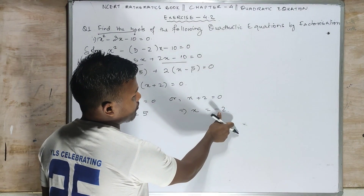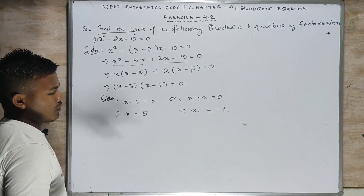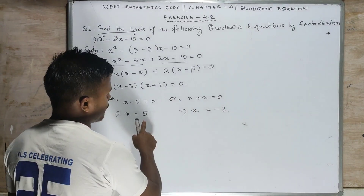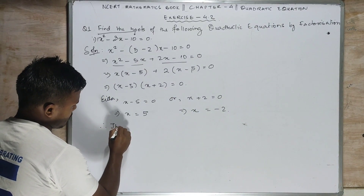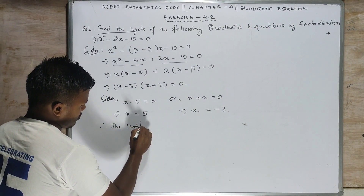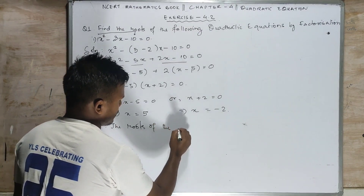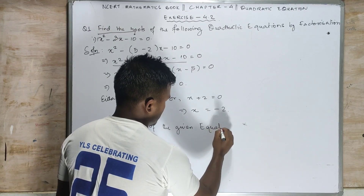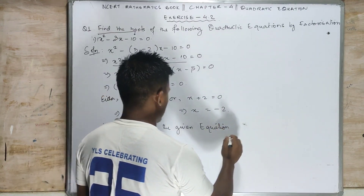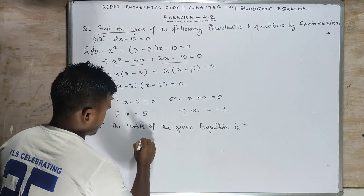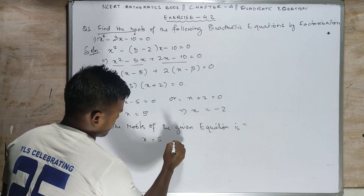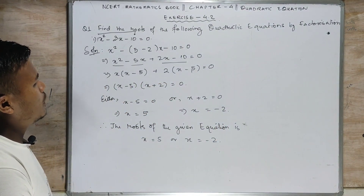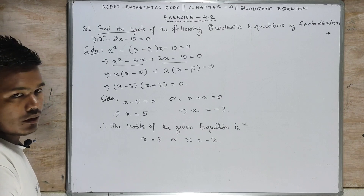As we discussed in previous classes, when we get a negative sign we note it but don't use it further here. So we keep the roots as 5 and minus 2. Therefore the roots of the given equation are x equals 5 or x equals minus 2.